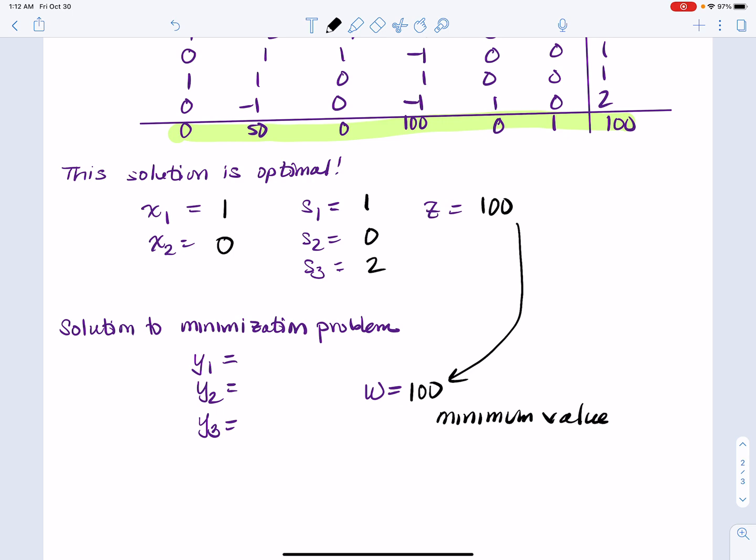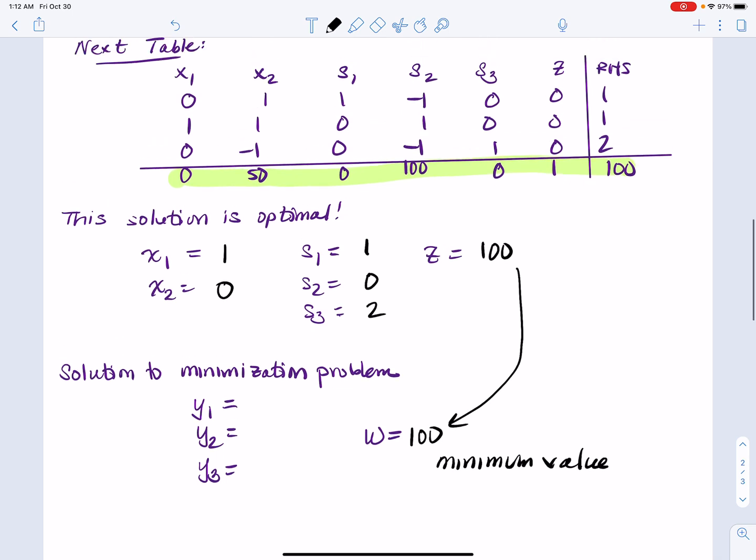But now what are the values of y1, y2, and y3 that cause it? As it turns out, and for this table it works out well, but as long as your basic variables all have coefficients of one, which they do,